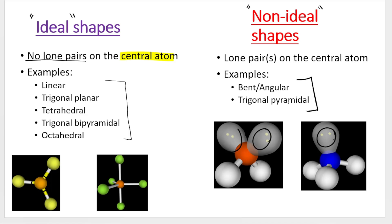And that is in contrast with the non-ideal shapes on the right. You can see that they do have lone pairs. Now we learned about two types: bent or angular, that's one type, and trigonal pyramidal, that's the second type. Now why do we care?